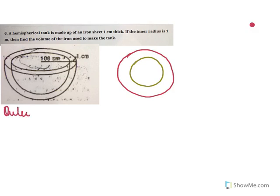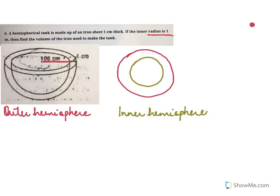Let's see the dimensions of the outer and inner hemispheres. The inner radius is small r, and they said it's 1 meter, so we make it 100 centimeters. The inner radius small r is 100 centimeters. Let me mark it here in this cross section — this is small r and that is 100 centimeters.